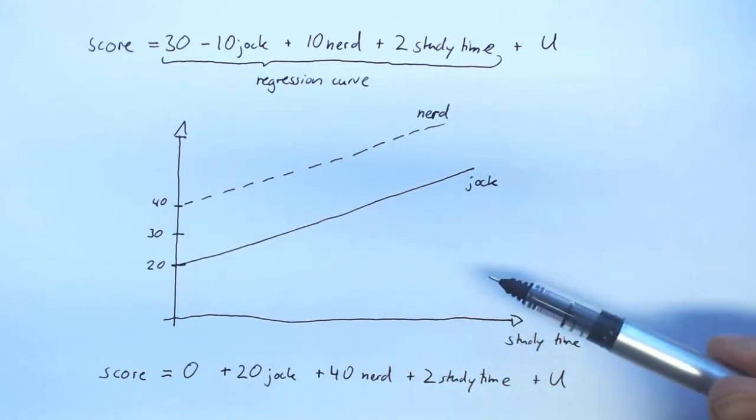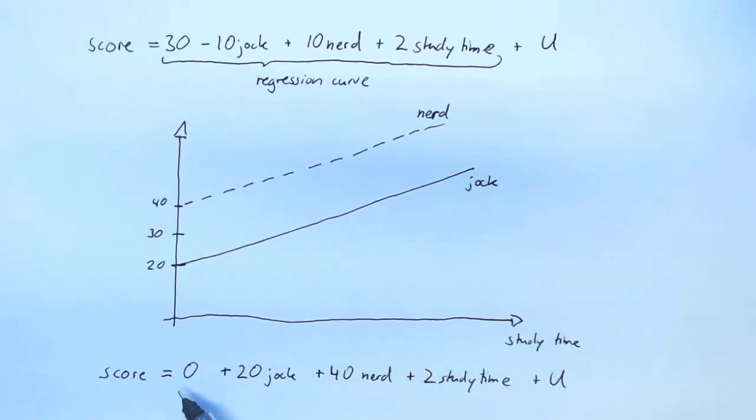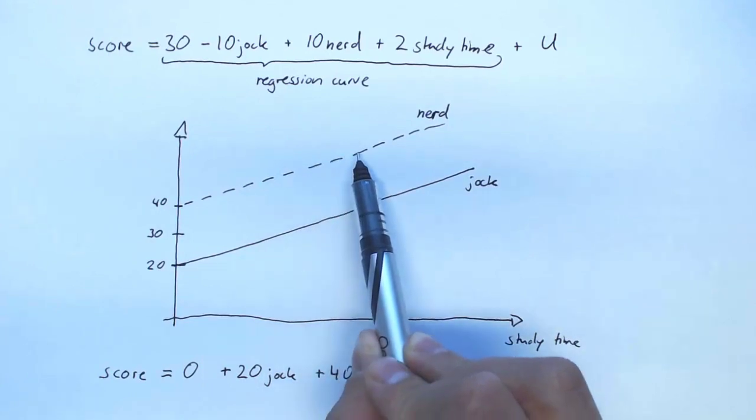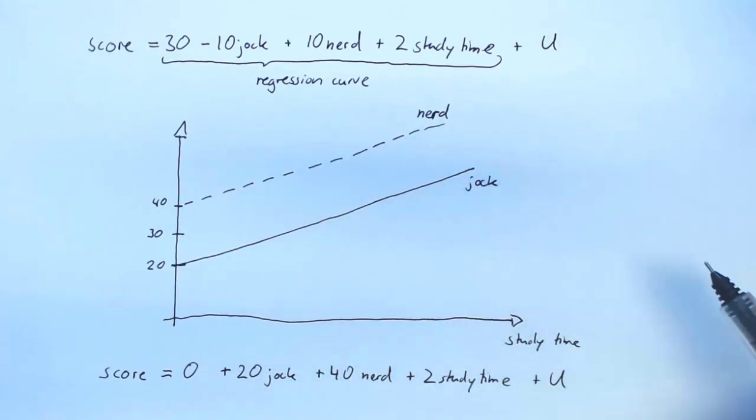And the same for nerds. Nerds get 0 plus 20 times 0 plus 40 times 1, so 40, which is exactly where we want them to be. And then 2 points for every hour studied. So we would be drawing the same curves.